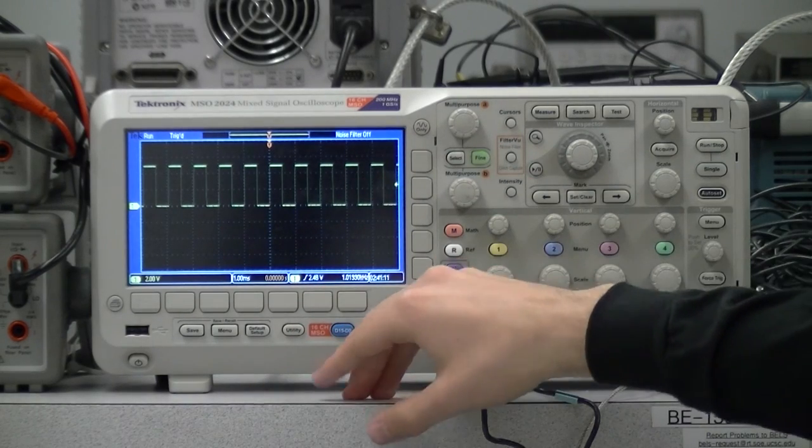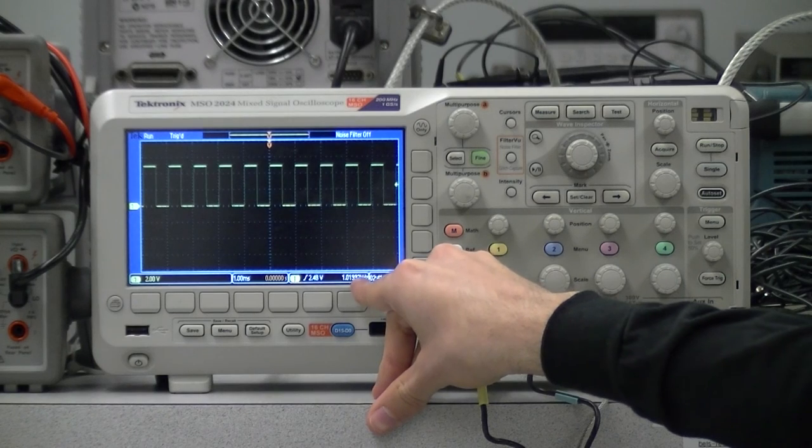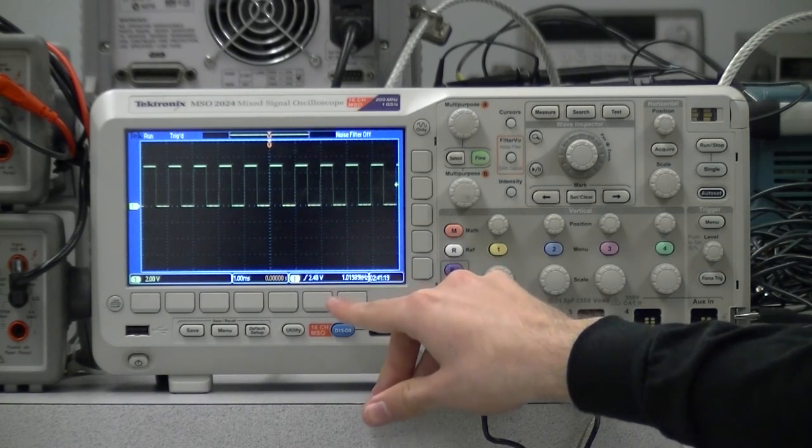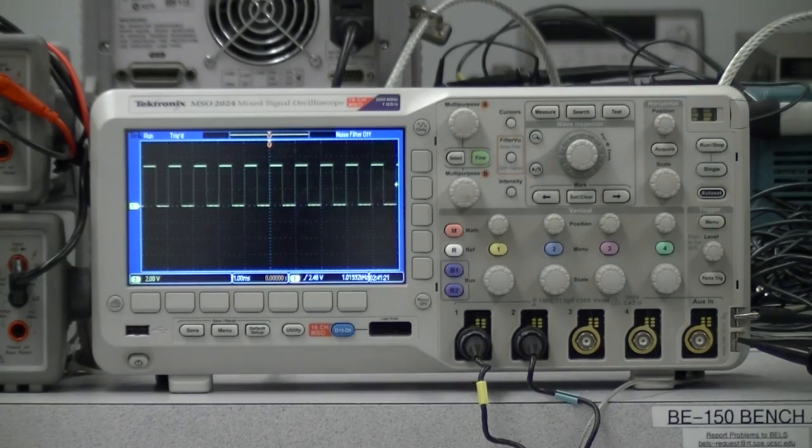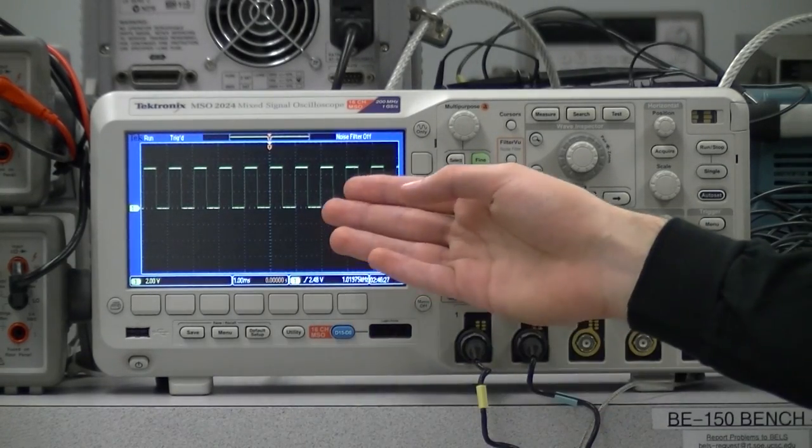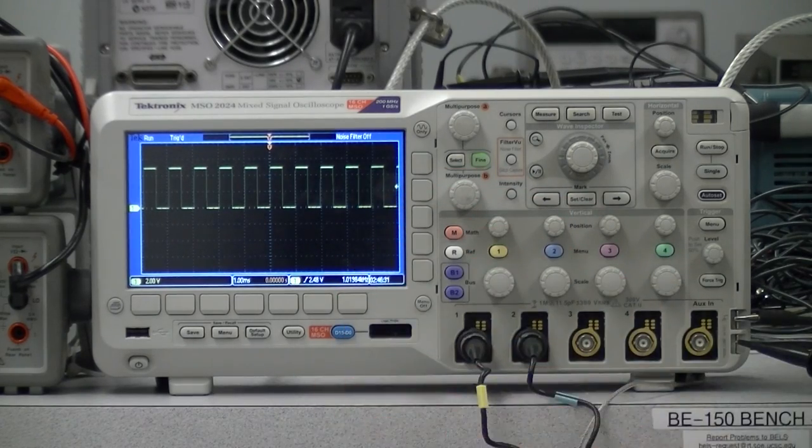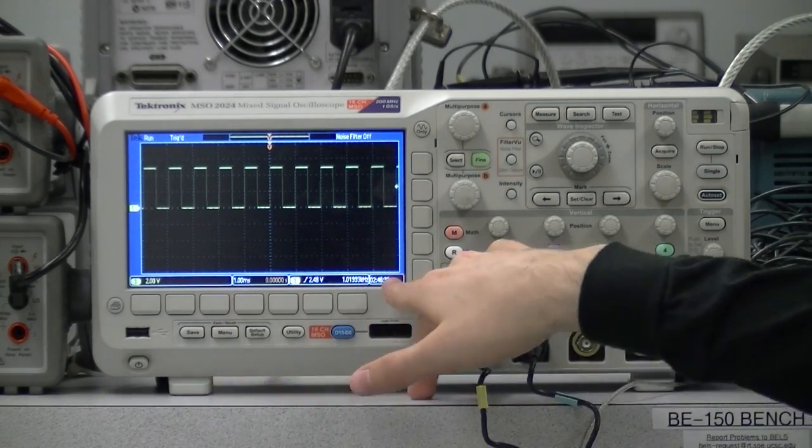The scope will also do this calculation for you, and report it here as 1.02 kilohertz. The calibration on these scopes is slightly off. You can get a lot of measurements just by looking visually at the screen here, but it's nice to also have the scope report them numerically.